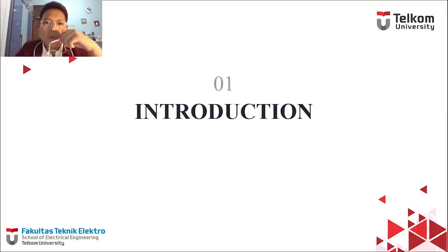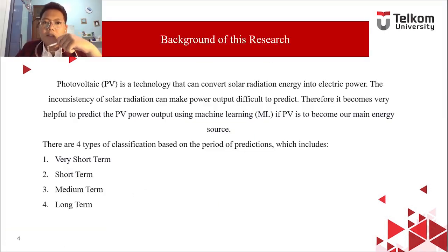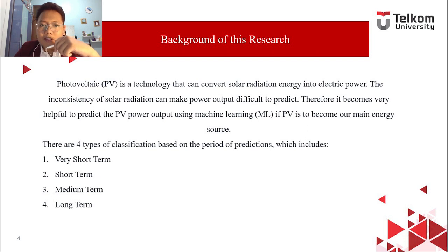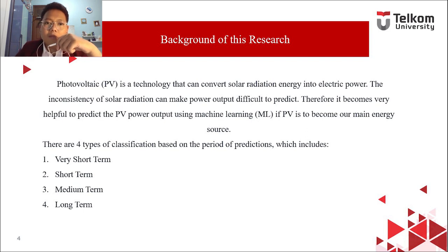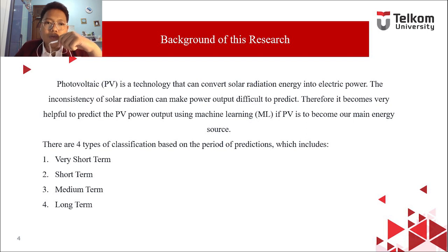First, we will get into the background of this research. Photovoltaic, or PV, is a technology that can convert solar radiation energy into electric power. The inconsistency of solar radiation can make power output difficult to predict. It becomes very helpful to predict the PV power output using machine learning if PV is to become our main energy source.